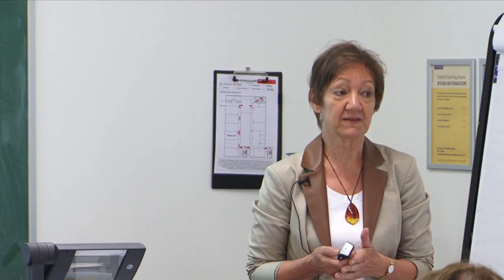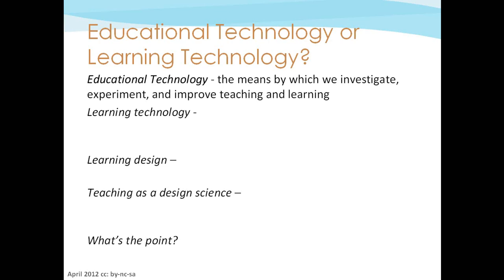In 1970, there was an article by Norman McKenzie and Michael Arrow from Sussex talking about the nature of educational technology. The focus for them was that it was about the means by which we investigate, experiment, and improve teaching and learning. I thought it was a valuable focus because it is about educational technology as a form of engineering — it's problem solving, it's trying to work out how to make things work better. And that was a very important focus for me.